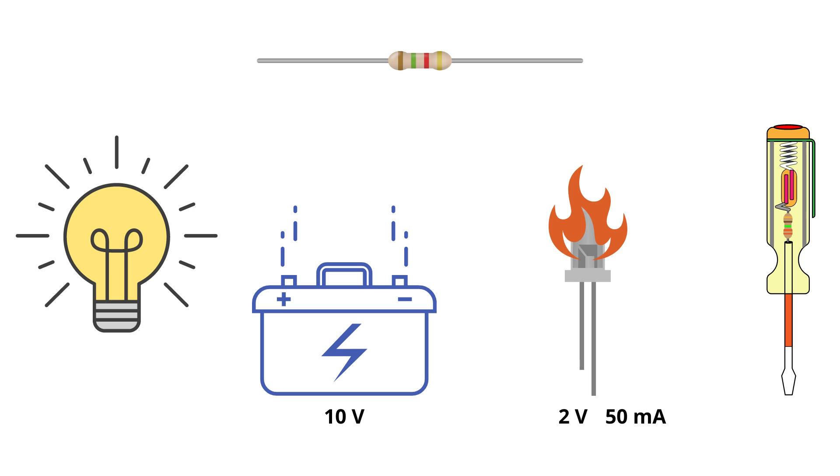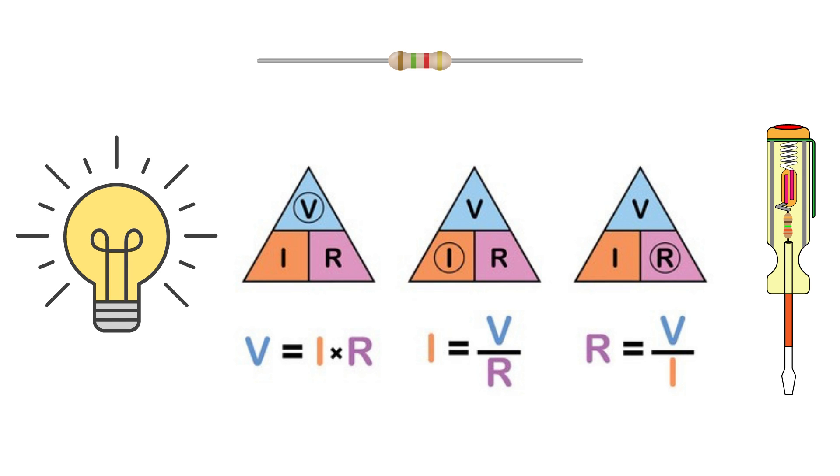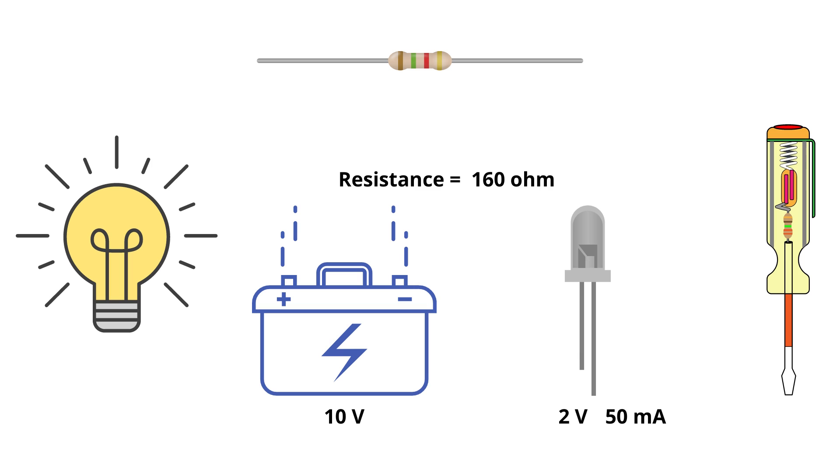So we connected a resistance of 160 ohms in that circuit, which we calculated using the triangle method of Ohm's law. Connecting the resistance in the circuit lowered the voltage required for the LED to operate, which is an application of voltage drop.